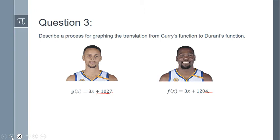Question three: describe a process for graphing the translation from Curry's function to Durant's function. This is really taken off from question one. I'm asking you, what's the translation? What did we do? In this case, we had the graph. We saw they had the same slope. All I had to do was shift one down to get to the other, or you could shift the other one up, so that you could put them right on top of each other. To obtain this function f(x), I could just move g(x) up 177, or I could move f(x) down 177. Either way.